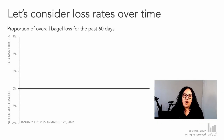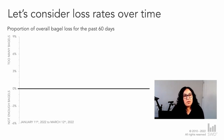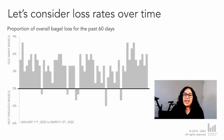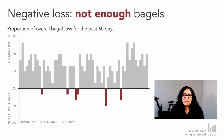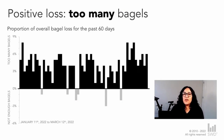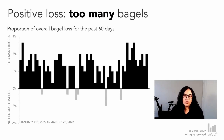Let's take a look at the data that supports this figure. We're going to be looking at the proportion of overall bagel losses by day for the past 60 days. As you look at the structure of this graph, you can see that loss rates can be both positive and negative. When I layer on the data, you'll notice quite a bit of variation from day to day — this is totally normal. Negative loss rates simply mean we didn't produce enough bagels to meet consumer demand, while positive daily loss rates mean we produced too many bagels and supplied retailers with more than consumers were willing to purchase.